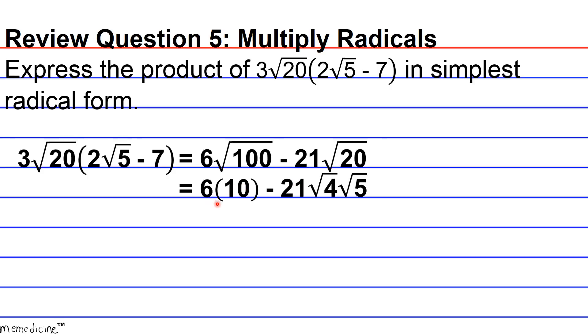You can also multiply 6 times 10, so the result is 60 minus 21 times 2 times √5, or 60 minus 42√5.